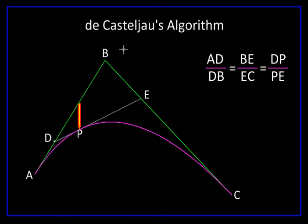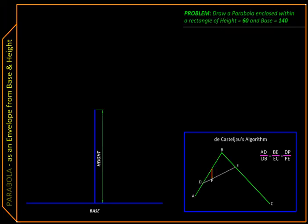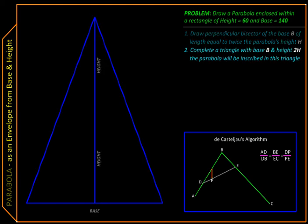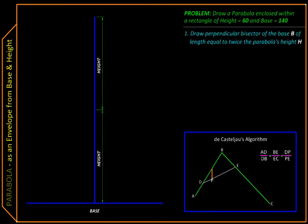So that is the construction we are going to use. So let us go back to our initial information, the base and the height. I am going to stack the height on top of itself, thereby doubling it. And then I will draw these two lines constructing an equilateral triangle.